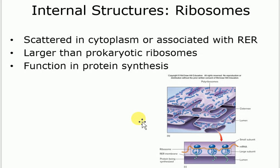Ribosomes come in two types: free and those stuck on the surface of the endoplasmic reticulum — making it rough. Both make proteins. The difference: free ribosomes make protein for the cell's own use, while those on the rough ER make proteins mostly for export. Also, the ribosomes of eukaryotes do the same function as in bacteria, but eukaryotic ribosomes are bigger than bacterial ribosomes.